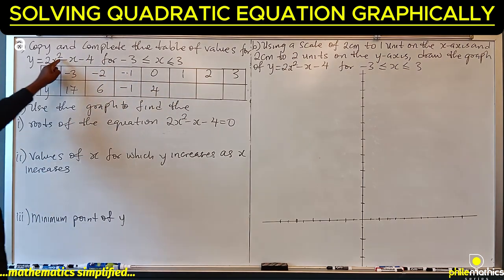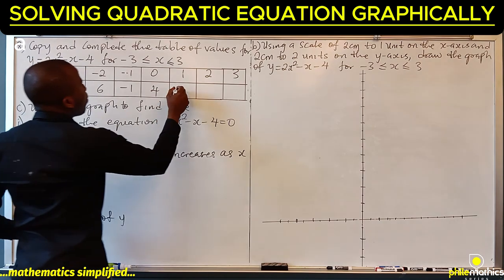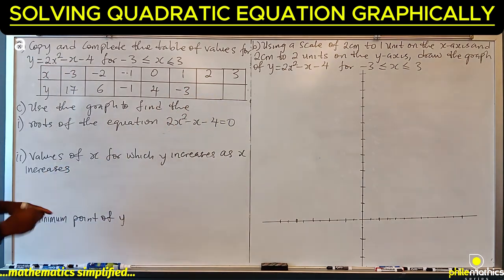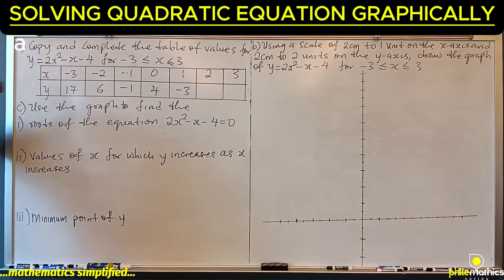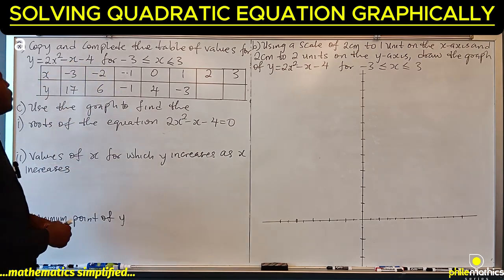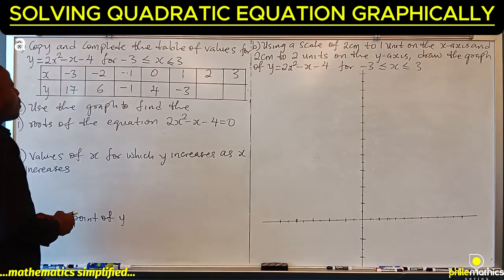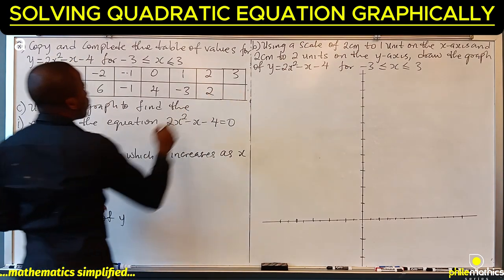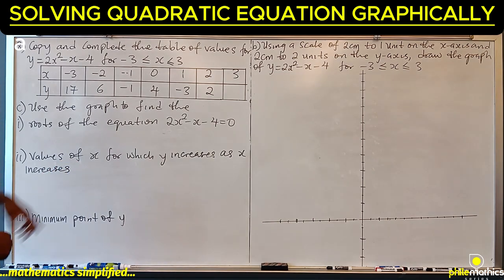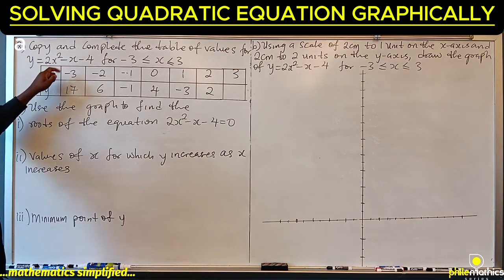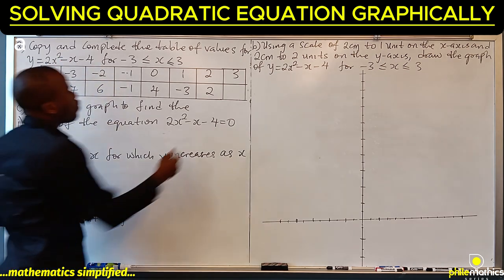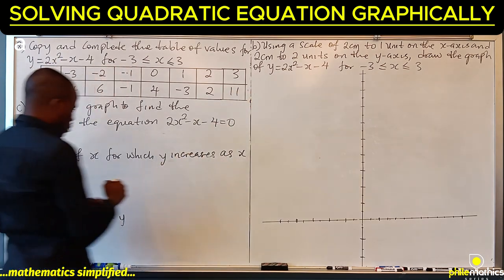For x = 1: 1 squared is 1, times 2 is 2, minus 1 is 1, minus 4 is minus 3. For x = 2: 2 squared is 4, times 2 is 8, minus 2 is 6, minus 4 is 2. For x = 3: 3 squared is 9, times 2 is 18, minus 3 is 15, minus 4 is 11. That completes the table.